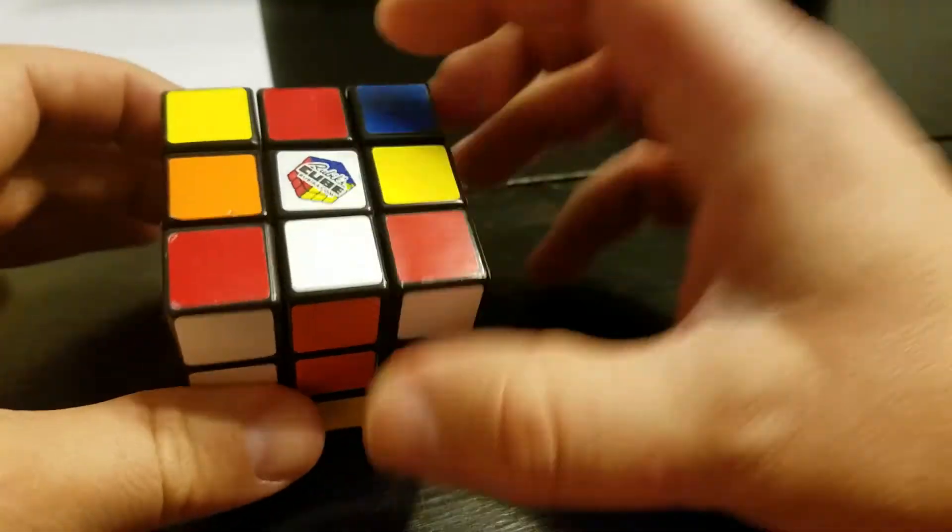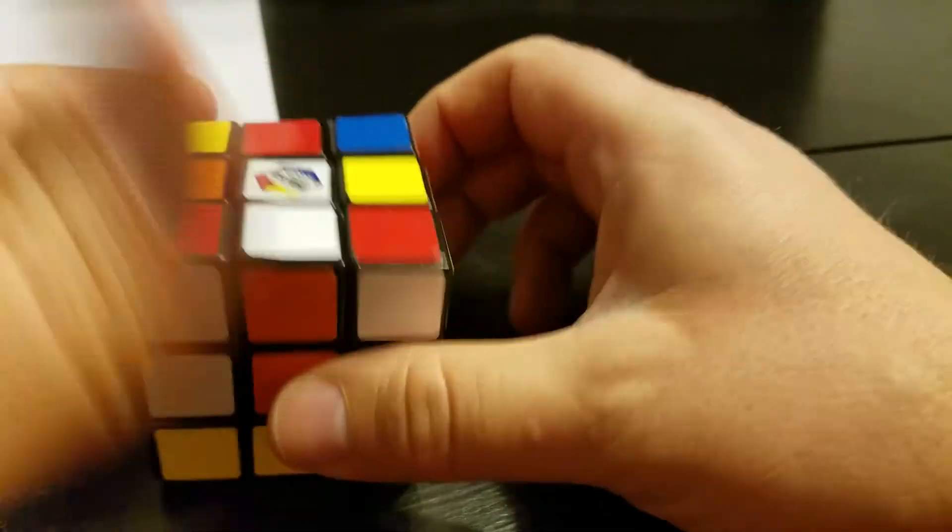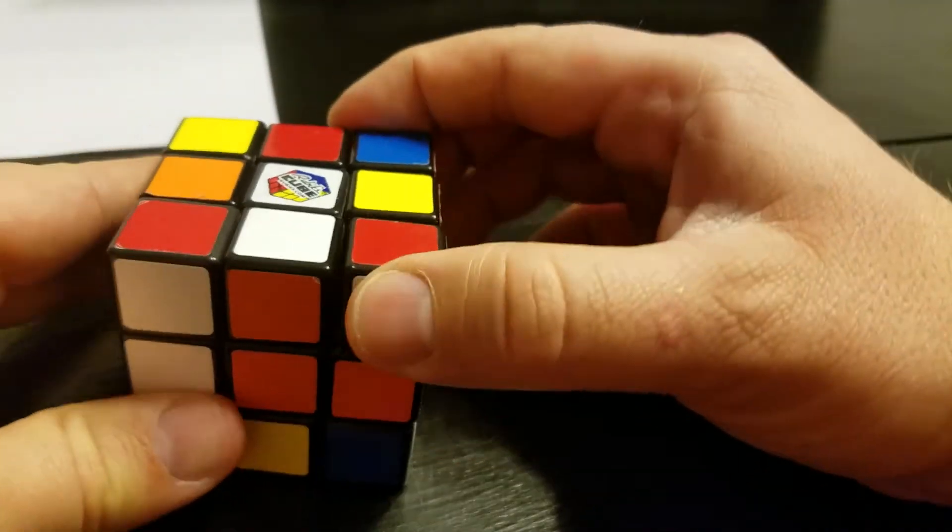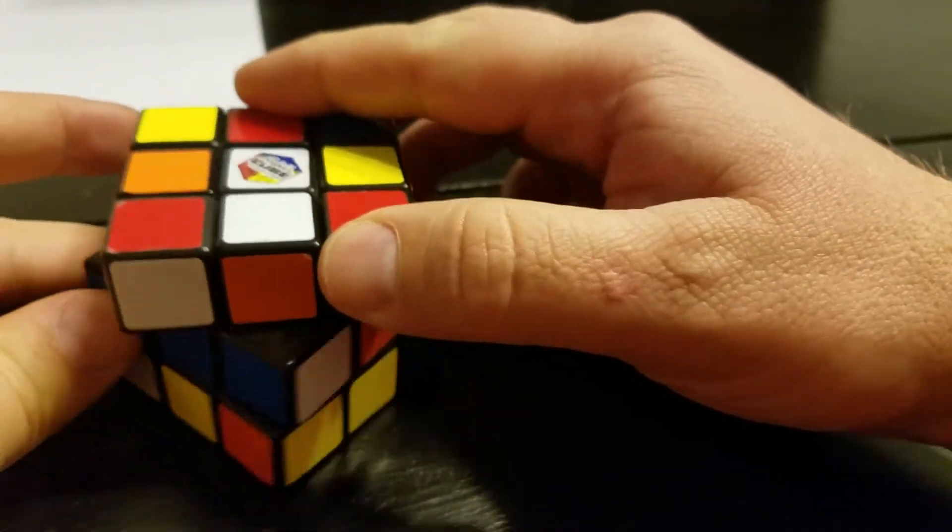Okay, so since I already have one started, that's the first step. You find one, doesn't matter which one, you get it started, and you make sure it's lined up. If it's not lined up, you turn it until it matches the one side that you need.